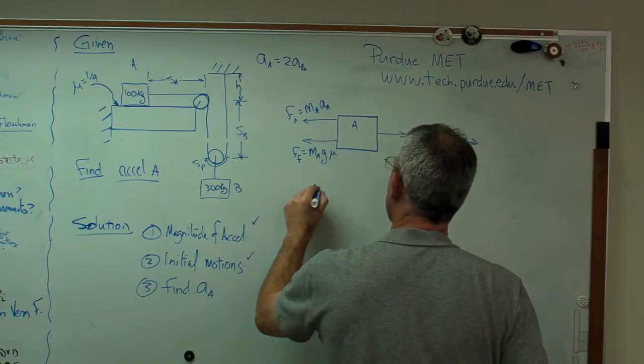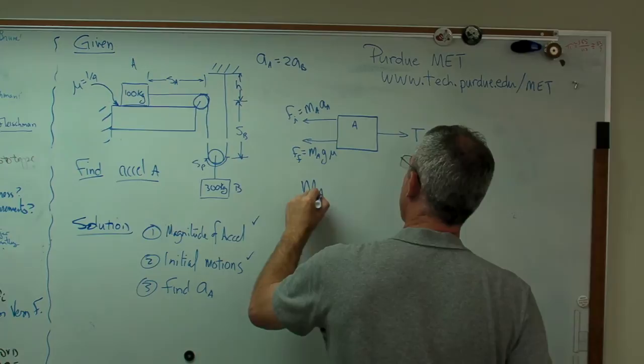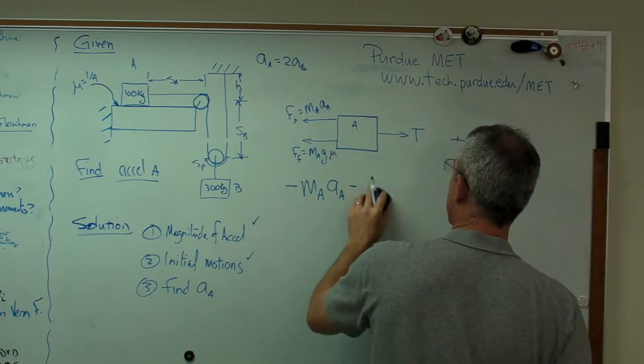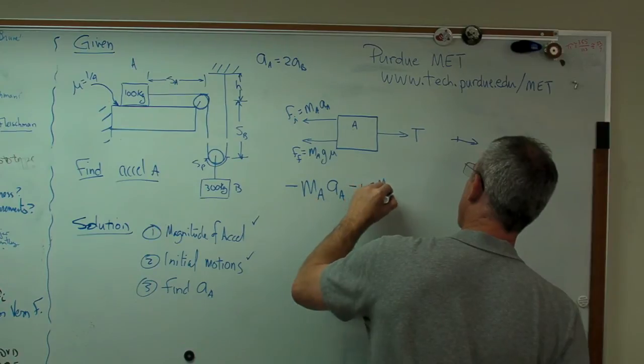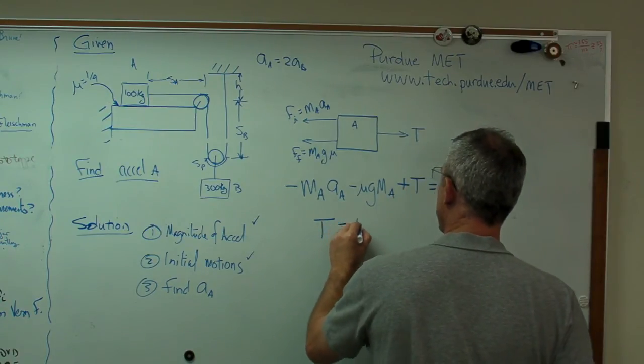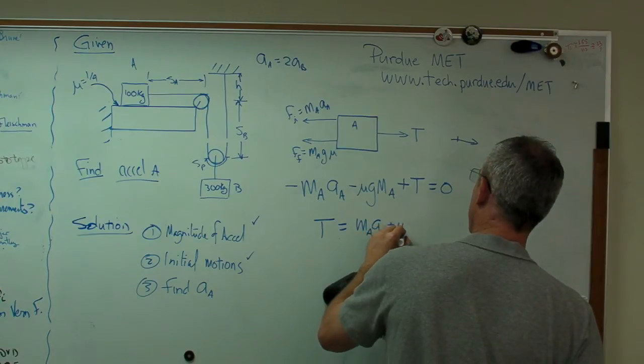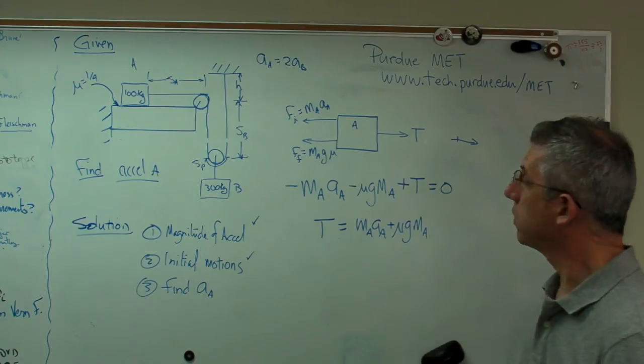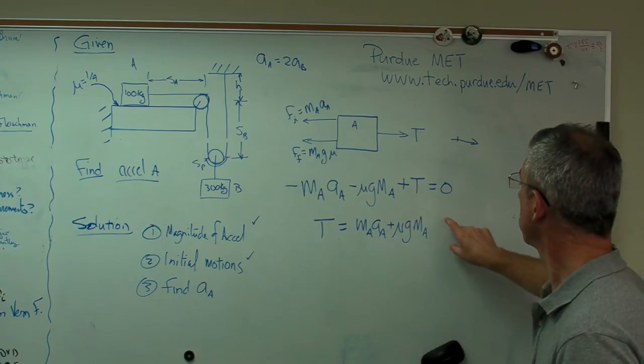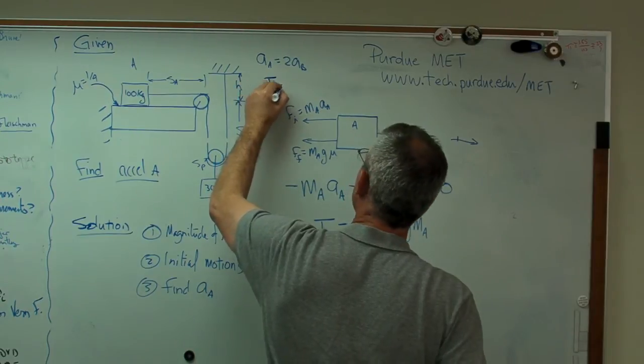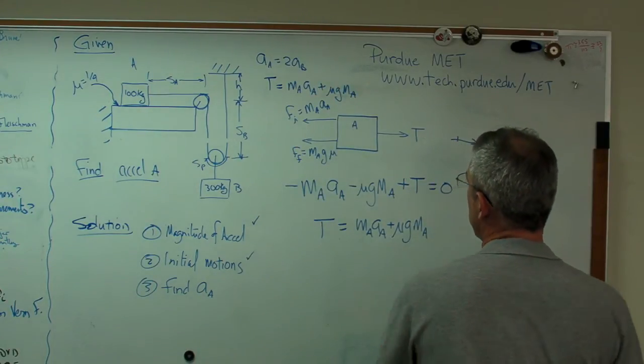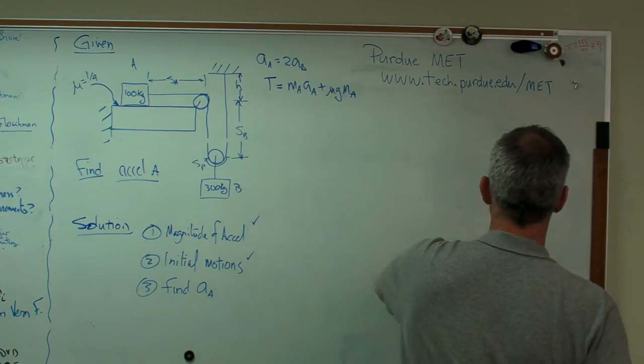When I sum these up, I'm going to get F equals MA. I'm going to assume positive in the direction of motion. So I'm going to get minus MA AA minus mu G MA plus T equals zero, or tension equals MA AA plus mu G MA. There's the equations of dynamic equilibrium for mass A.